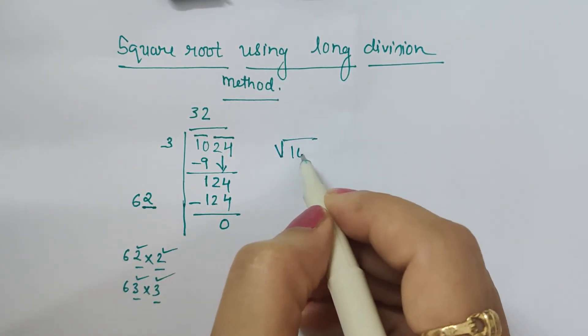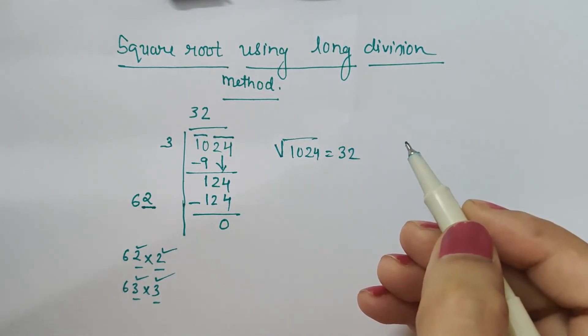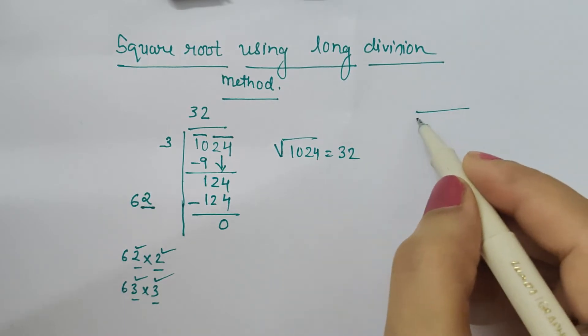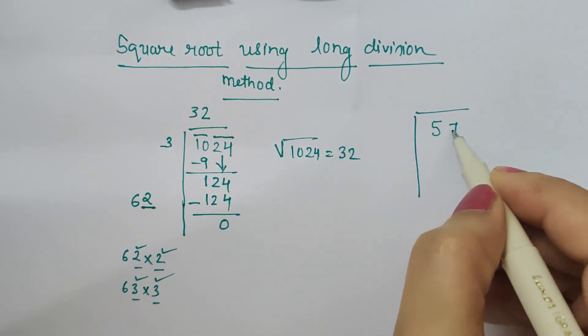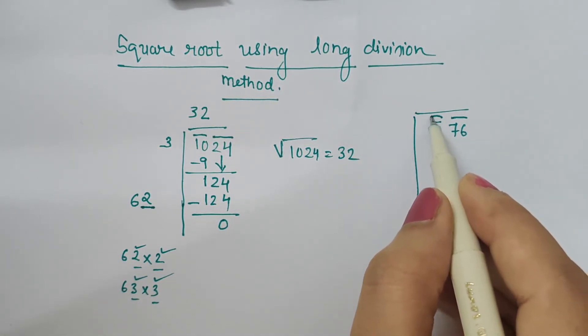Now let's solve another example: 576. The square root of 576. Again, from unit digit we have to start pairing. Here 5 is left alone without any pair. No issue, we have to put bar sign.